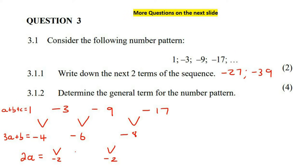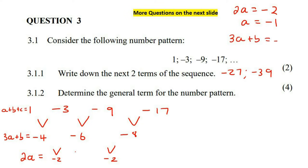Let's write those all down and start. You always start at the bottom. So, 2A is equal to negative 2, therefore A would be negative 1. Now, you come up to the next part: 3A plus B equals to negative 4.